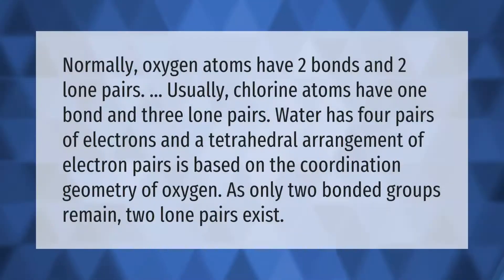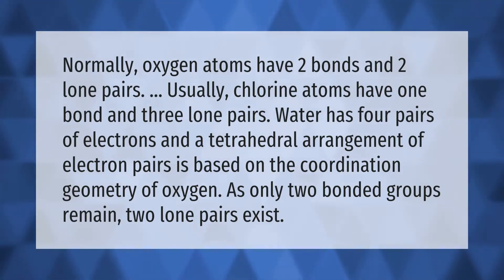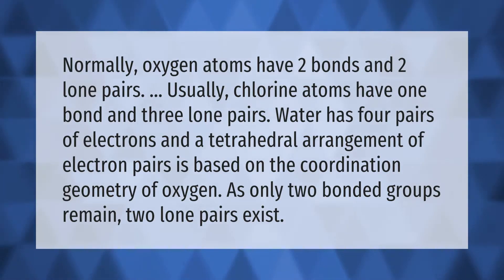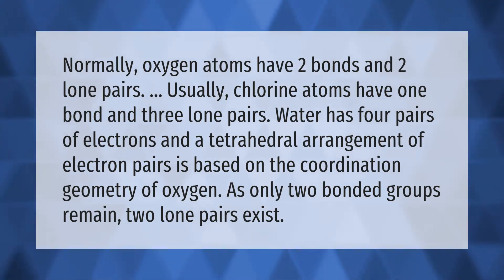Normally, oxygen atoms have two bonds and two lone pairs, while chlorine atoms usually have one bond and three lone pairs. Water has four pairs of electrons, and a tetrahedral arrangement of electron pairs based on the coordination geometry of oxygen. Since only two bonded groups remain, two lone pairs exist.